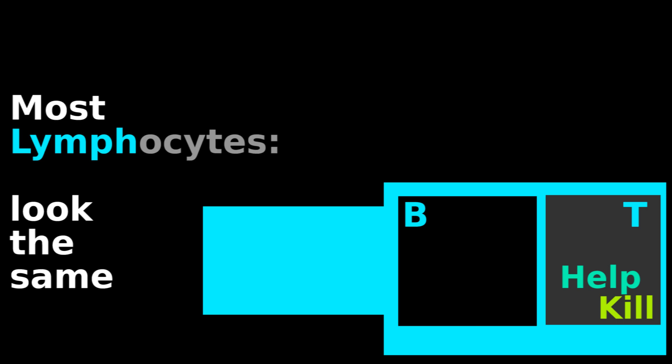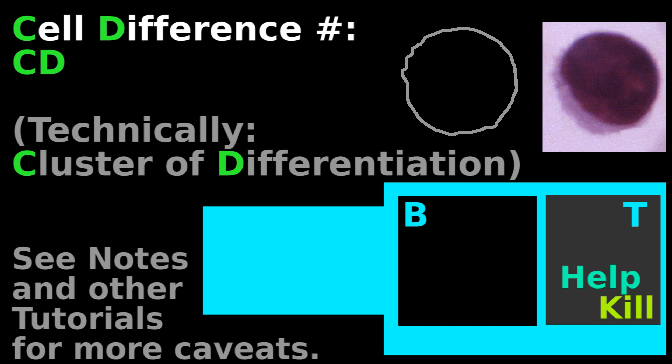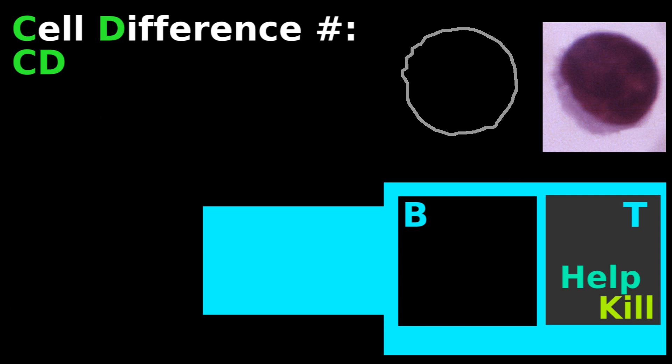As for T cells, you cannot tell a helper T from a killer T cell under a regular microscope. Instead, you need a special tool that can detect cellular differentiation markers on the surface.